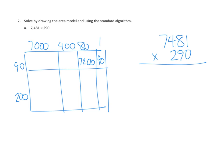9 tens times 4,000 — that's going to be 36, and then counting the tens: 1, 2, 3 — three place values, so 36,000. And 9 tens times 7,000 — 9 times 7 is 63, and we've got 4 tens total, so that's 630,000.